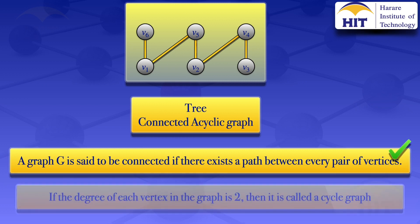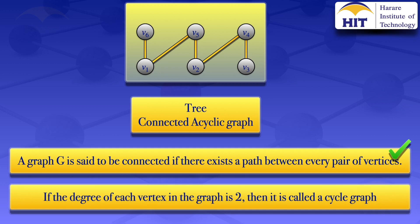If the degree of each vertex in the graph is 2, then the graph is said to be a cycle graph. In this case, if we look at vertex 6 and vertex 3, we see that they each have a degree of 1.